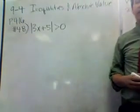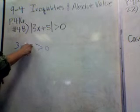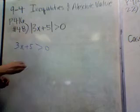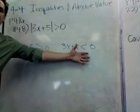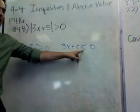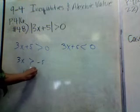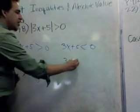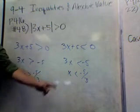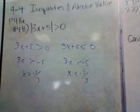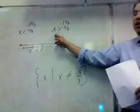Page 416, number 48. There are two cases: the positive case and the negative case. Positive case: 3x plus 5 is greater than 0. Negative case: 3x plus 5 is less than 0 — we change the sign. We get 3x is greater than negative 5, so x is greater than negative 5 over 3. On the positive side, 3x is less than negative 5, so x is less than negative 5 over 3.